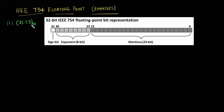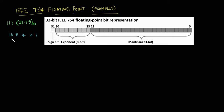Now let us convert this number into IEEE 754 floating-point representation. First of all, let's convert this decimal number into binary. We will convert 21 into binary by writing the weights 1, 2, 4, 8, 16 — and 21 is 10101.